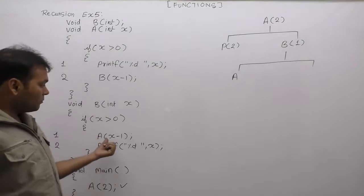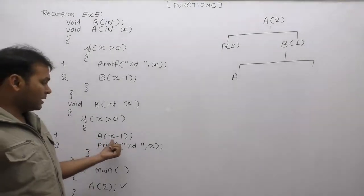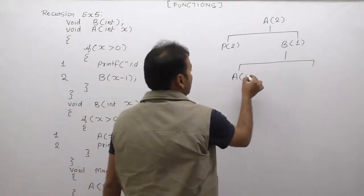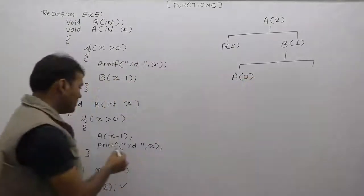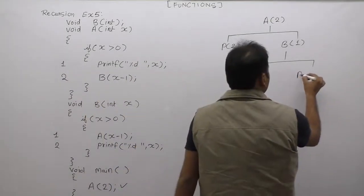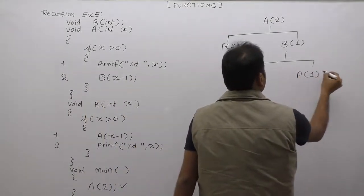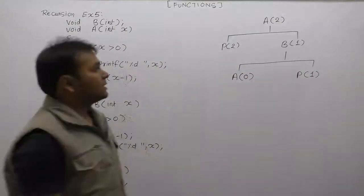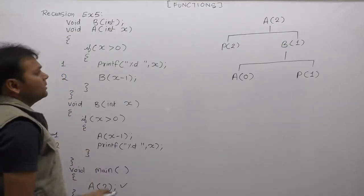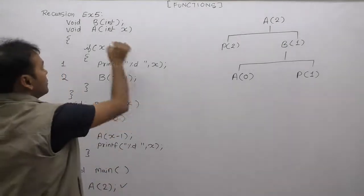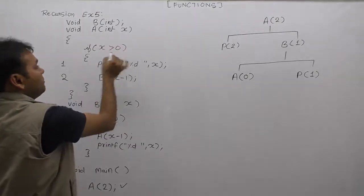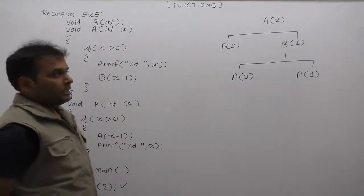Next one, what call will be made? 1 minus 1 means function A is passed 0. Next printf will pass x value which is 1. Again, in this case recursively, indirectly A is called. Next time for A, function call is made. In this case, when A is called, value passed is 0. In 0's case, condition is false. False means nothing to process.